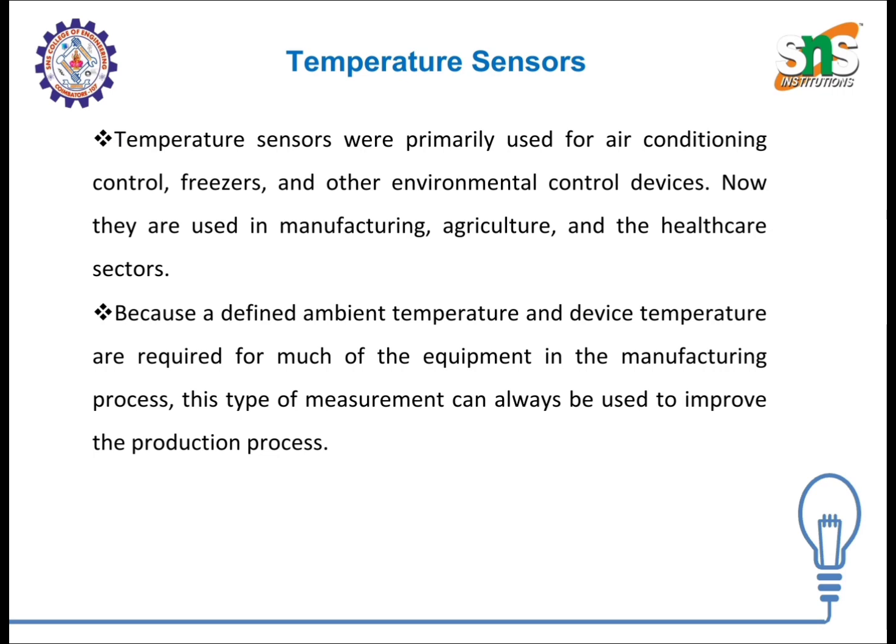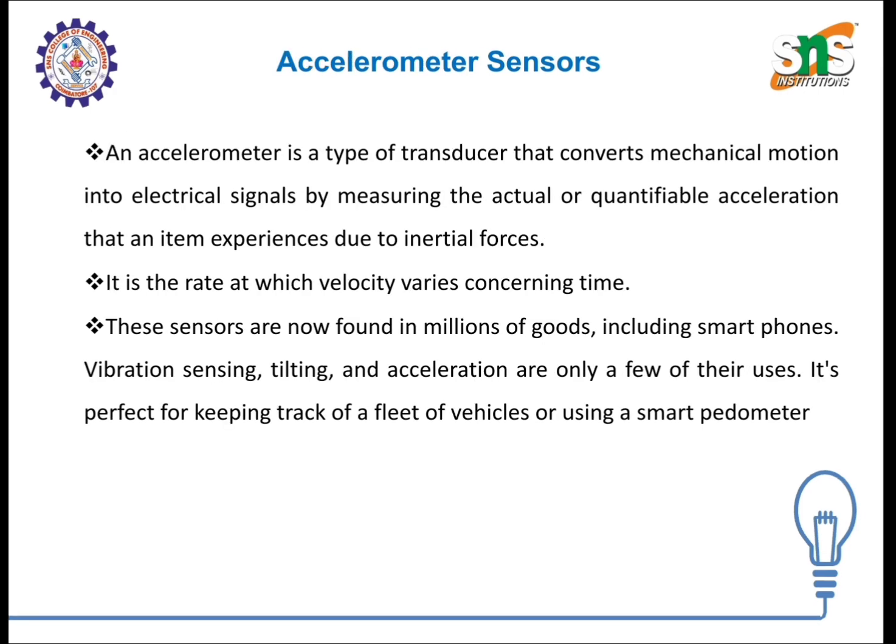This type of measurement can always be used to improve the production process. Accelerometer sensors are a type of transducer that converts mechanical movement into electrical signals by measuring the actual or relatable acceleration that an item experiences due to inertial forces. It is the rate at which velocity varies with respect to time. These sensors are now found in millions of goods, familiar examples being smartphones, where vibration sensing, tilting and acceleration are only a few of their uses.